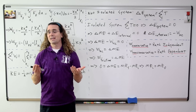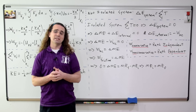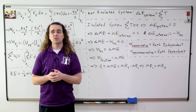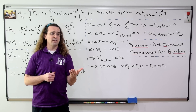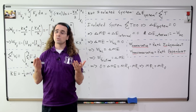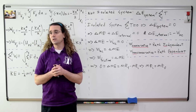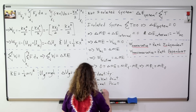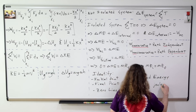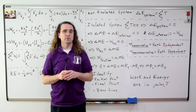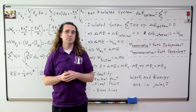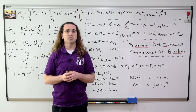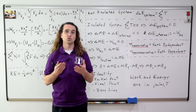Class, remind me: what do you need to identify whenever you use conservation of mechanical energy or work due to friction equals change in mechanical energy? Initial point, final point, horizontal zero line. Remember, just like work, all forms of mechanical energy are in joules.